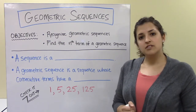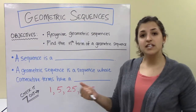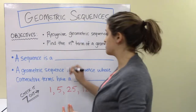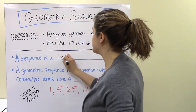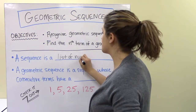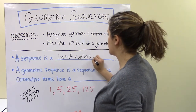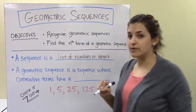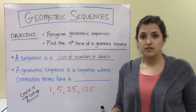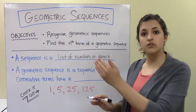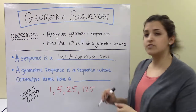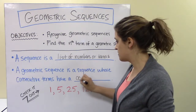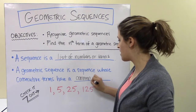Let's review some definitions. A sequence is just a list of numbers or terms. And a geometric sequence is a sequence whose consecutive terms — so terms in a row — have a common ratio.